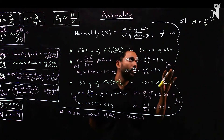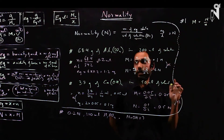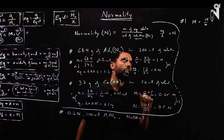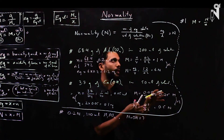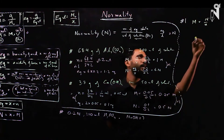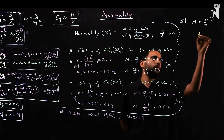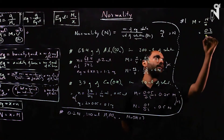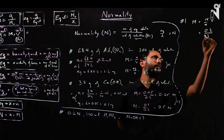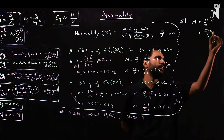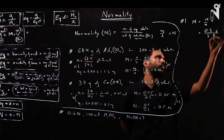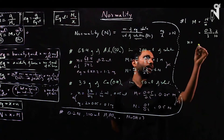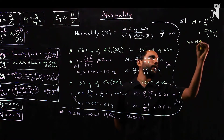Normality is always equal to or greater than molarity because equivalents are always equal to or greater than moles. Molarity = 0.2 ÷ 3 = 2/30. Number of moles = molarity × volume; using milliliters gives millimoles, so 2/30 × 200 = 40/3 ≈ 13.33 millimoles.